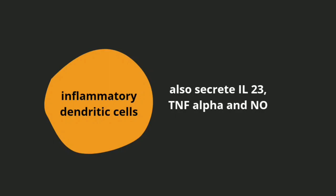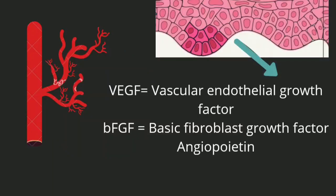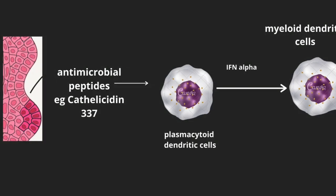TNF-alpha maintains the inflammatory cascade, and nitric oxide causes vasodilation. Regarding vascular changes, keratinocytes secrete vascular endothelial growth factor (VEGF), basic fibroblast growth factor (bFGF), and angiopoietin, which together drive angiogenesis. Nitric oxide from inflammatory dendritic cells causes vasodilation, contributing to erythema, while angiogenesis contributes to the positive Auspitz sign.